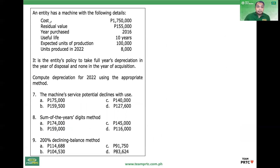Cost of the asset: $1,750,000. Residual value: $155,000. Acquired in 2016, life 10 years. Expected units of production: 100,000 units. In 2022, the entity produced 8,000 units.